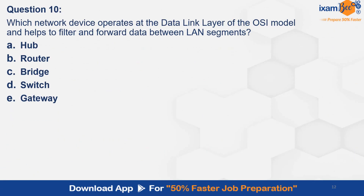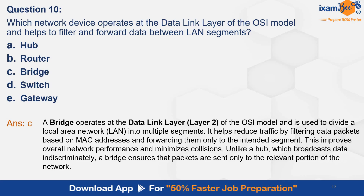Question 10. Which network device operates at the data link layer of the OSI model and helps to filter and forward data between LAN segments? Option A. Hub. B. Router. C. Bridge. D. Switch. E. Gateway. And the correct answer is C — bridge. A bridge operates at the data link layer and is used to divide a local area network into multiple segments. It reduces traffic by filtering data packets based on MAC addresses and forwarding them only to the intended segment, improving network performance and minimizing collisions. Unlike a hub, which broadcasts data indiscriminately, a bridge ensures packets are sent only to the relevant portion of the network.